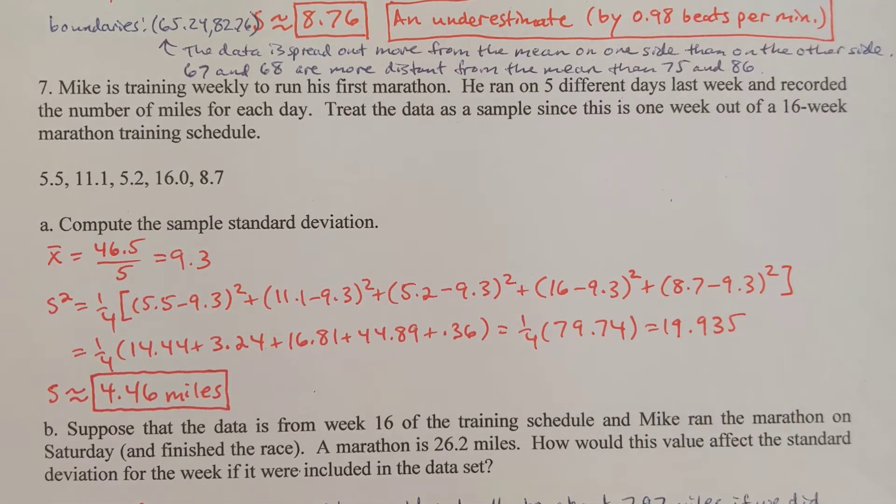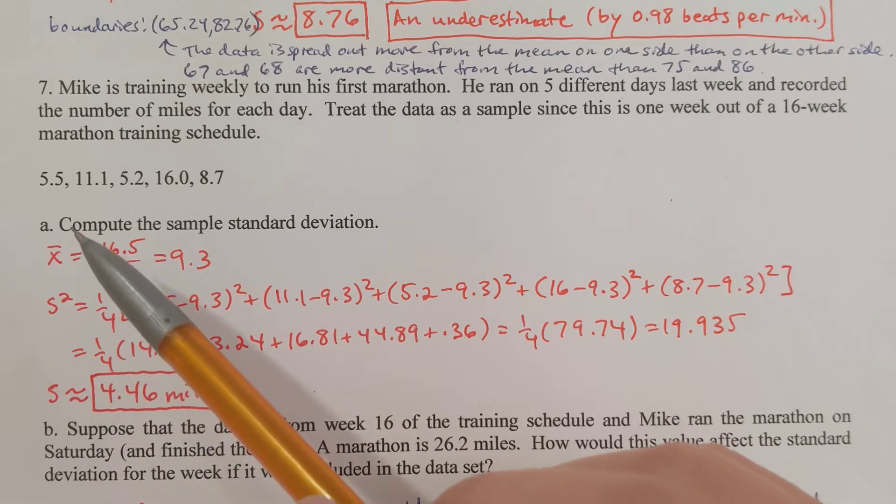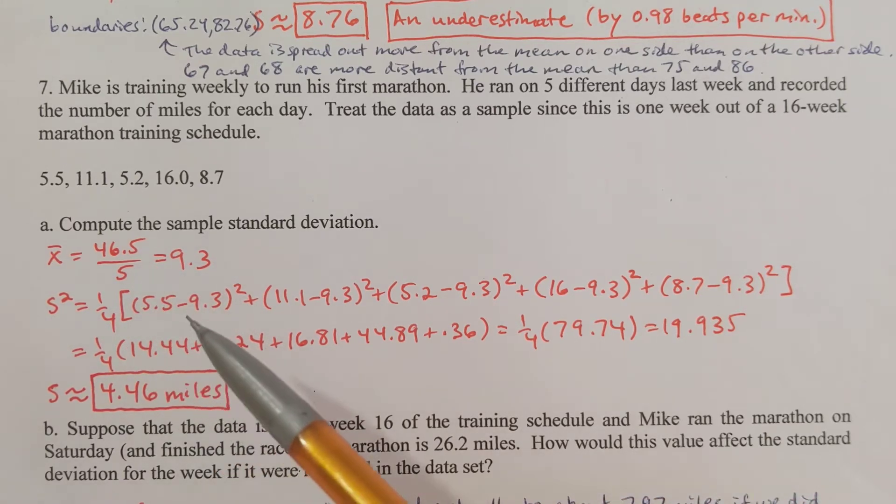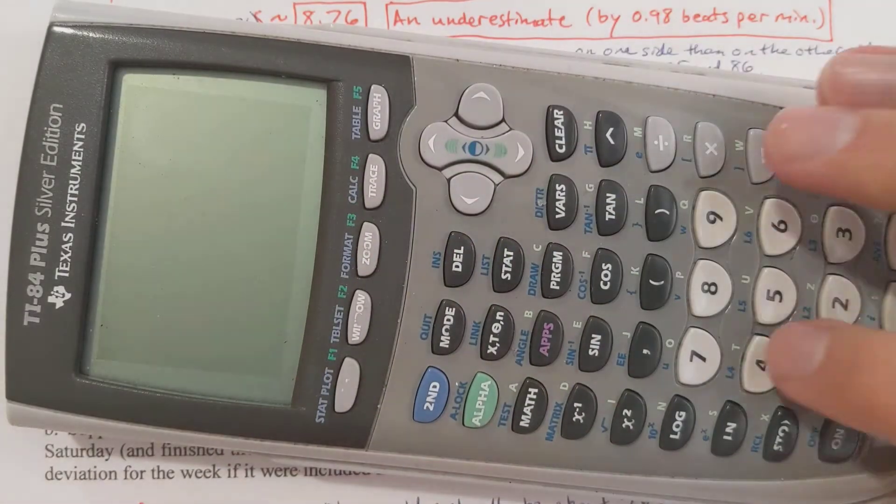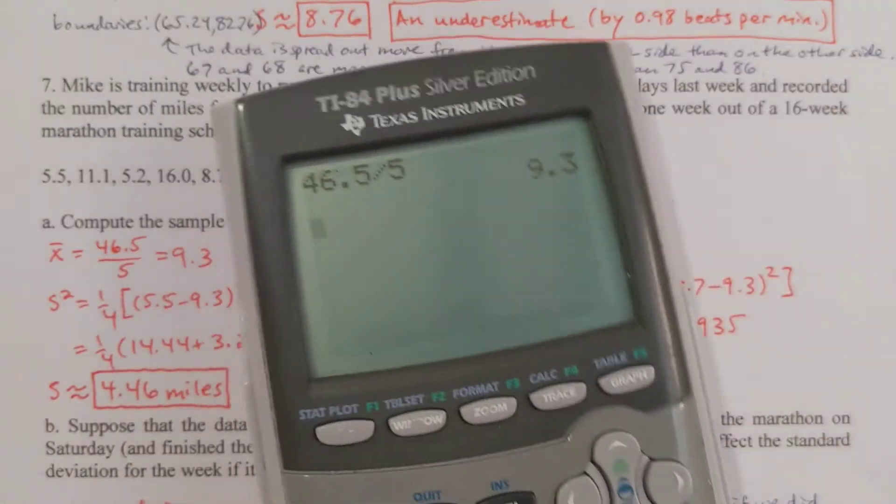Treat the data as a sample since this is one week out of a 16-week marathon training schedule. Part A, we want to compute the sample standard deviation. Now remember what we need to do first is get the mean, because the mean is used in the calculation for the variance. Sample mean is represented by x-bar. When you add up the five numbers, you get 46.5 exactly, then divide that by 5 and that gives you exactly 9.3.